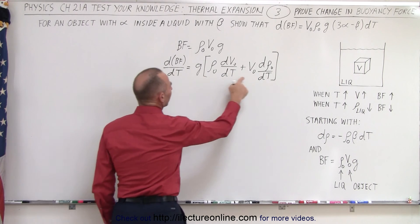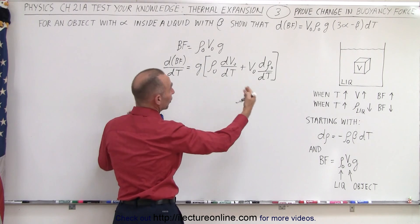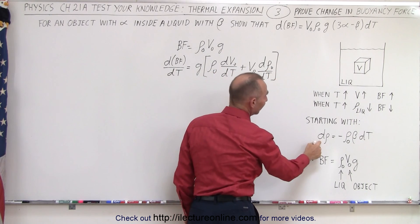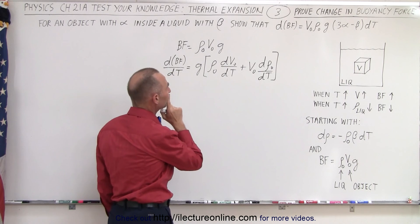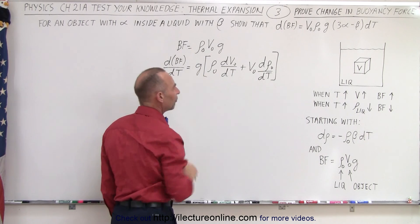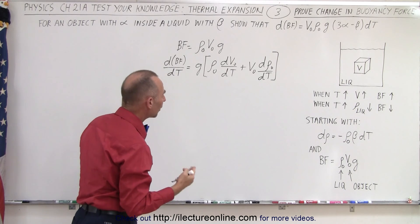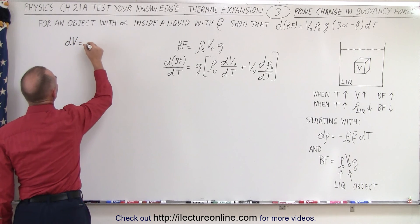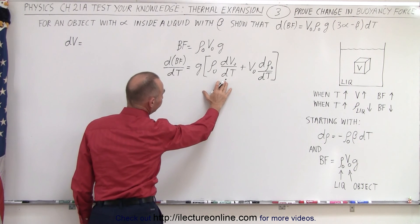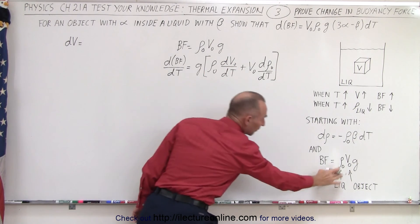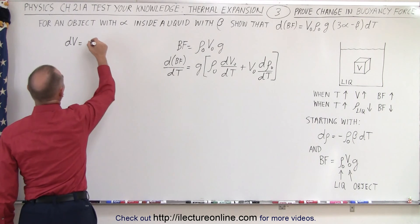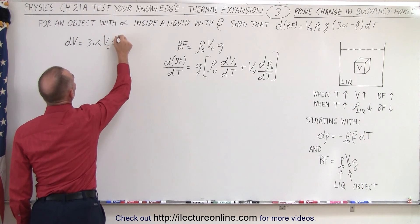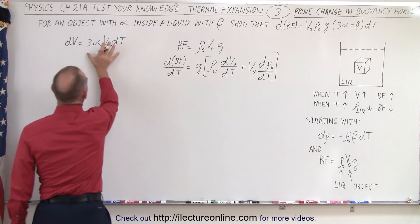Now we have a DT on all terms in the equation, so we can multiply both sides by DT. We can then replace the change in the density using our definition: d(rho) equals minus rho-initial times beta times DT. And the change in the volume — since we're dealing with the volume of the object — that would be three times alpha times the original volume times the change in temperature. So DV can be written in that form.